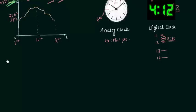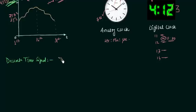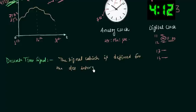Let's study what is a discrete time signal, because it is important to understand this before we move to the digital signal. The signal which is defined for discrete intervals of time is called a discrete time signal.